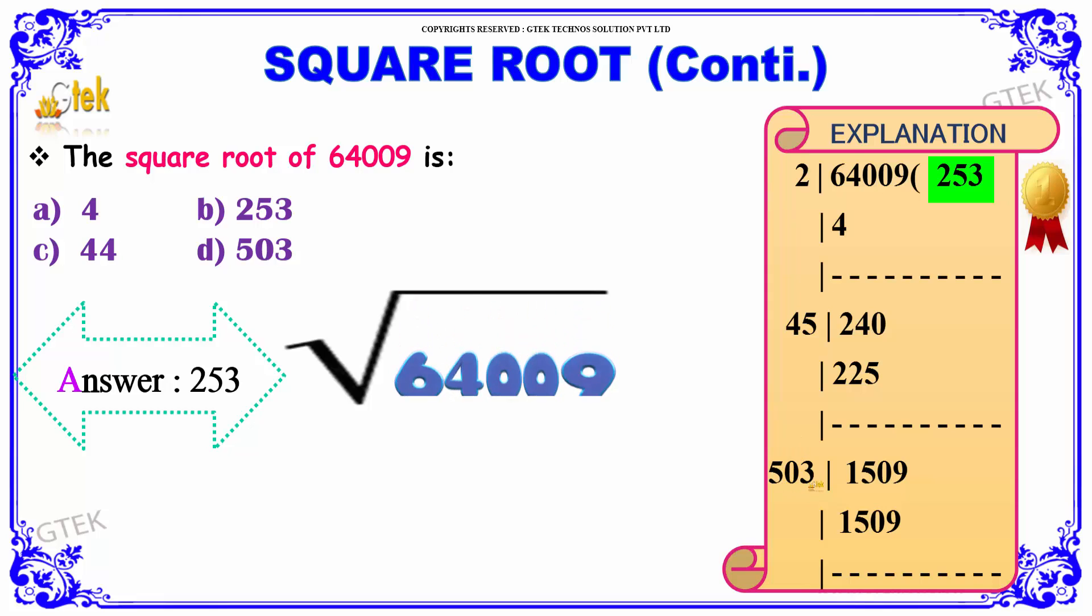50 is combined with 3 to make 503 and 503 into 3 will give you 1509, which is the same as that of the remainder. So the perfect square root of 64009 is nothing but 253, which is option B. Hence, option B is your answer.